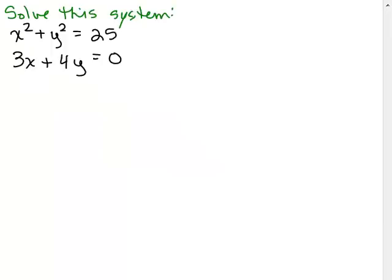All right, let's solve this system. We have x squared plus y squared equals 25 and 3x plus 4y equals 0.